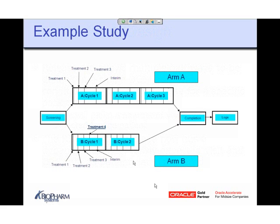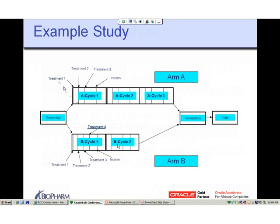Before the demonstration, let me describe the study set up in our training database. It's a complex study. It has a screening visit, and depending upon that visit, a person will be assigned either to Arm A or Arm B. Arm A is defined to be three cycles — each cycle has three visits for treatments and a fourth rest or interim visit. Arm B has only two cycles planned, with four treatment visits and one interim visit. Both arms have a completion visit, completion form, and log visits — AEs and con-meds, for example, collected in the log visit.